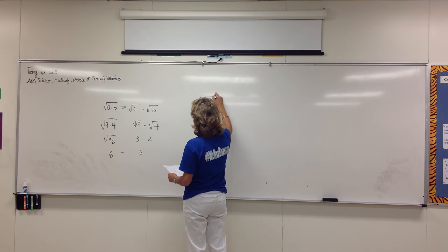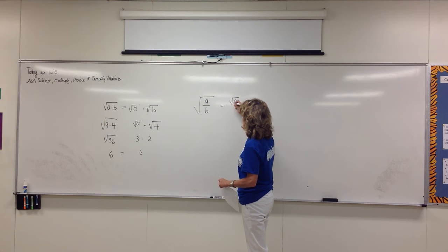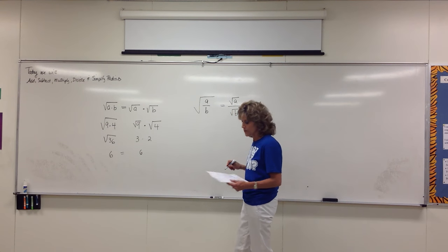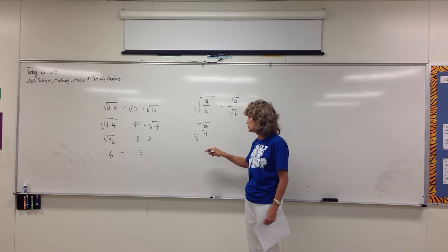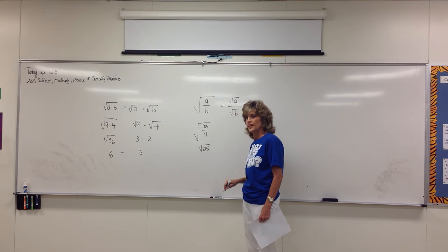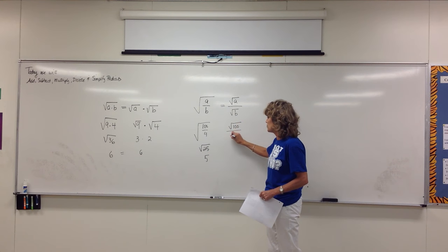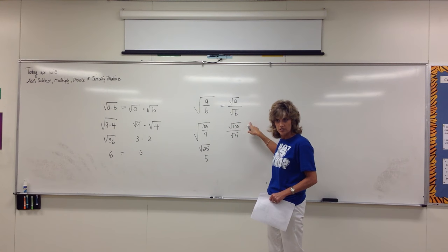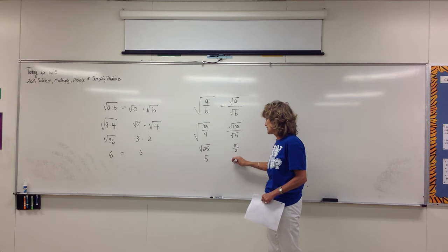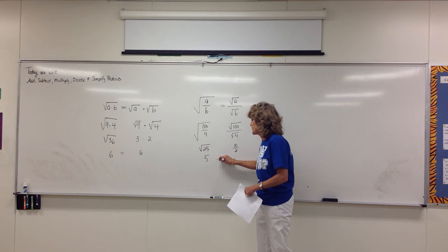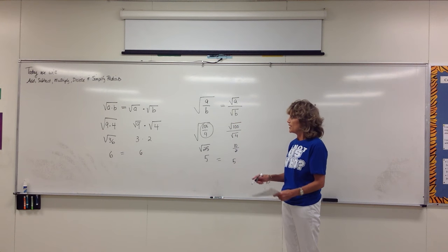There is a quotient rule, and it says if you're dividing under a radical — A divided by B — it's okay to pull it apart into two pieces and think of it as the square root of A divided by the square root of B. For example, the square root of 100 divided by 4: if you leave it under one radical and do the division, it's the square root of 25, which is 5. If you pull it apart as the square root of 100 over the square root of 4, that's 10 divided by 2, which is also 5. So you get the same thing either way.